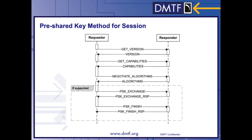The other method for establishing a SESN is shown here. This is the pre-shared key method for creating a SESN. The SESN begins with PSK exchange and the corresponding PSK exchange response. The SESN is fully established at the successful completion of PSK finish and PSK finish response. After this, just as in the asymmetric method, any data that traverses the transport in this session is protected.